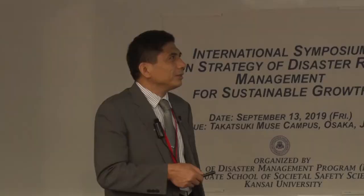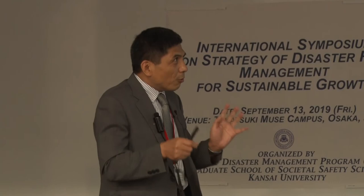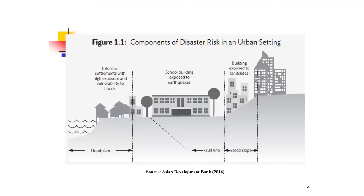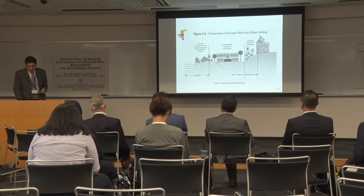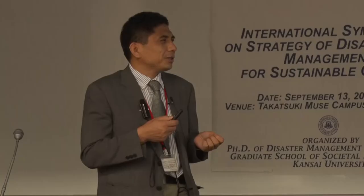But in urban areas there are some natural hazard phenomena such as floodplains, fault lines, and steep slopes. If people live in floodplains they are exposed to floods. If buildings are located near fault lines or near steep slopes, they may be exposed to earthquakes and landslides. So how to reduce the disaster risks from urban planning is our task.